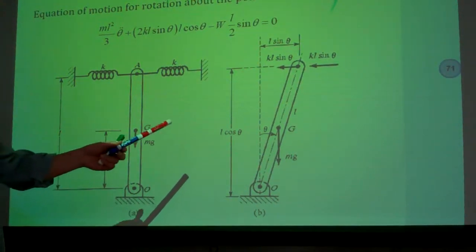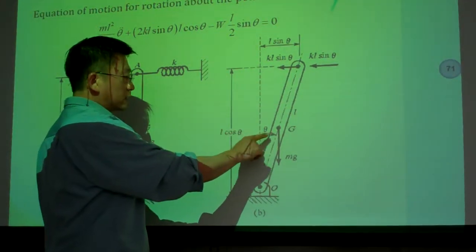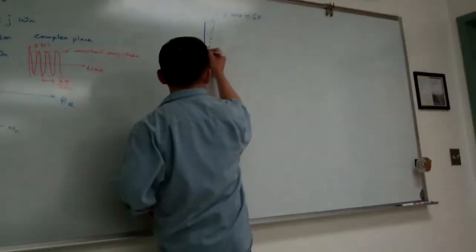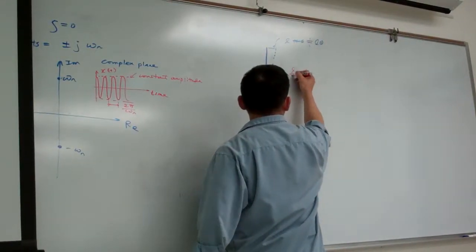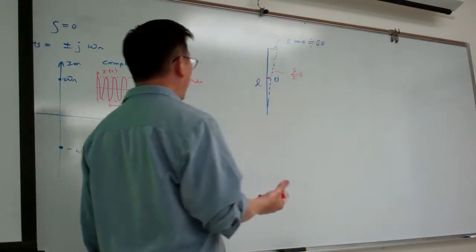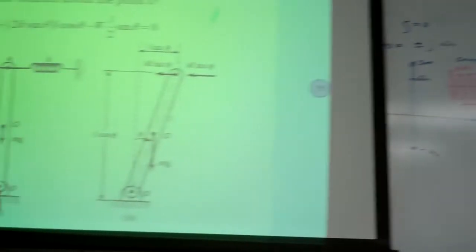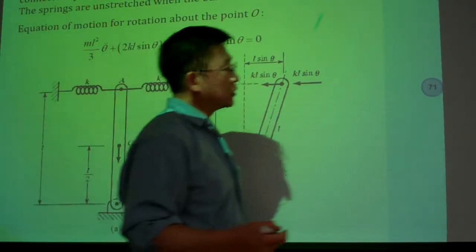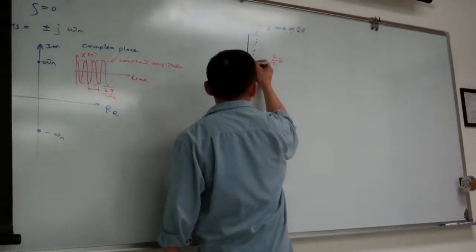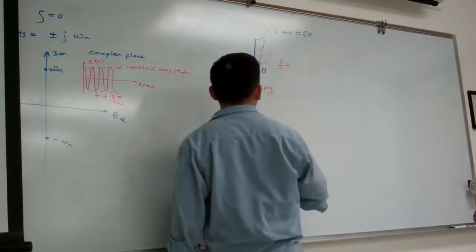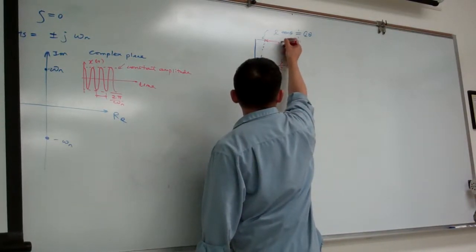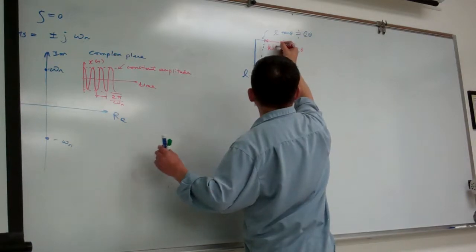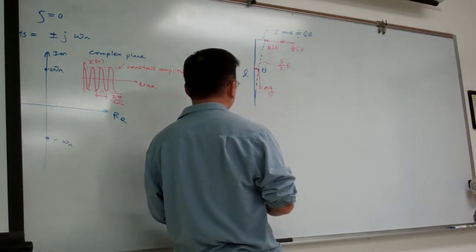On the other side, you can consider the gravity, so the mass center is being perturbed a little bit to there. The perturbation is L over 2 theta. That is the amount of the perturbation, and then the weight is mg. So basically here we have mg, the weight force, and here we have two spring forces.